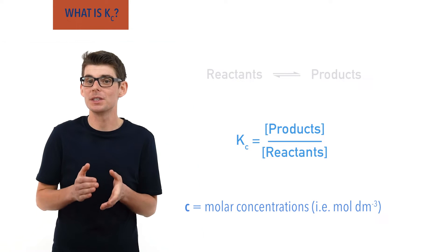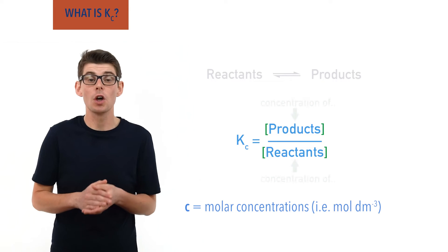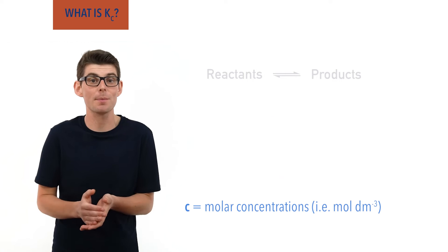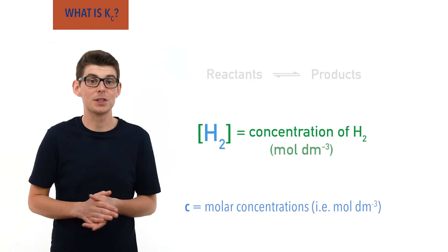Anytime you see square brackets in an expression they are referring to the concentration of the thing inside the brackets. For example, square brackets H2 means concentration of H2 in moles per decimetre cubed.